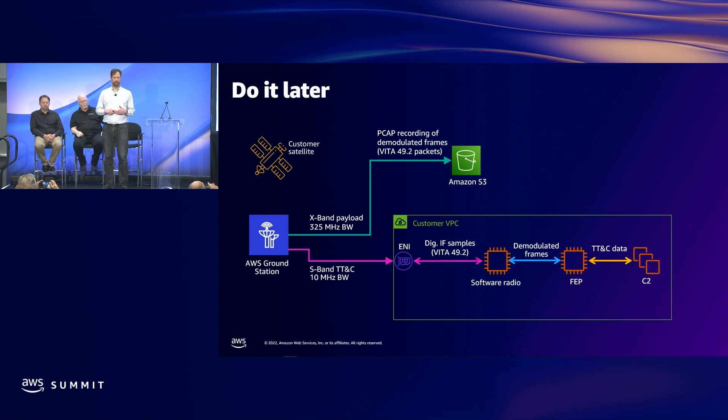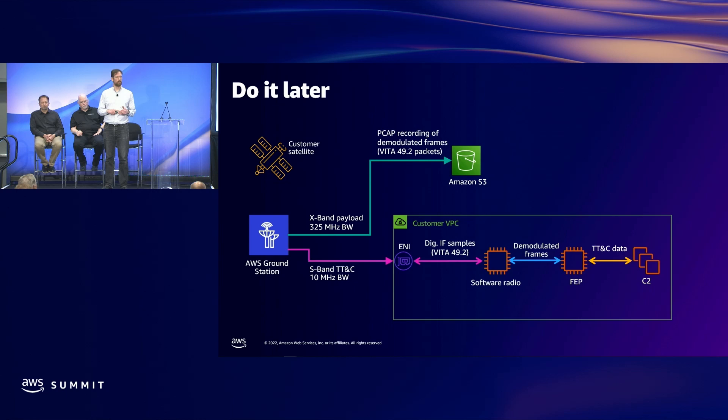Here's a similar architecture but looking at asynchronous delivery. The TT&C connection at the bottom is the same — commanding the spacecraft and monitoring across the contact — but on the top half we've replaced the real-time processing infrastructure with a recording delivered to S3. You might do that because it's unattended, or because you need downlinks from two or three different spacecraft before it's useful to process them together.